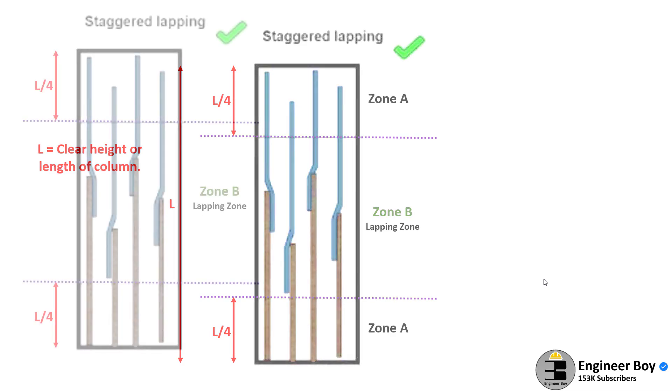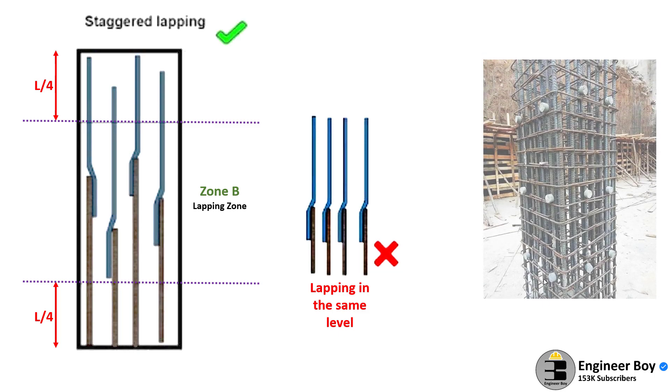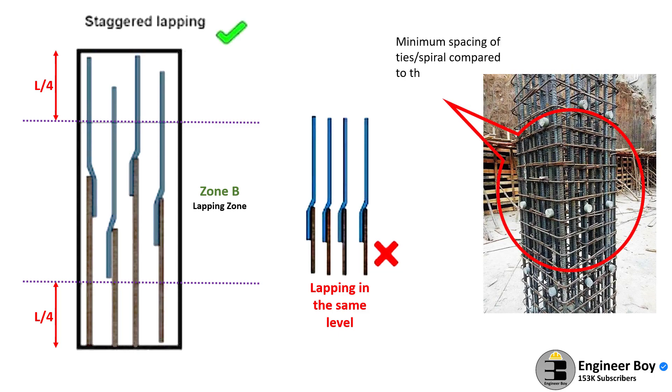Remember, bars should not be lapped at the same level or section, but should be staggered at different sections as shown in the diagram. Also, the spacing of the ties or rings in the lapping zone must be minimum compared to the regular column's tie spacing.